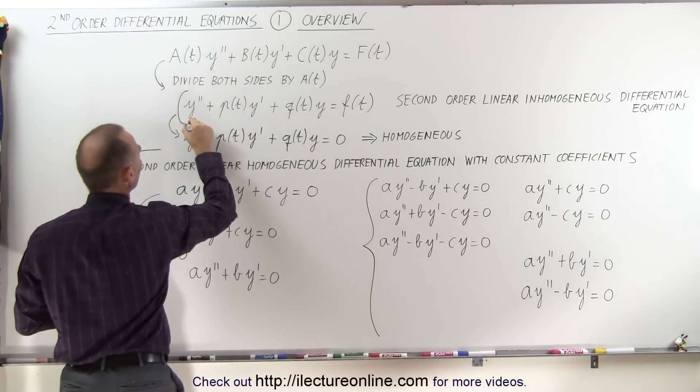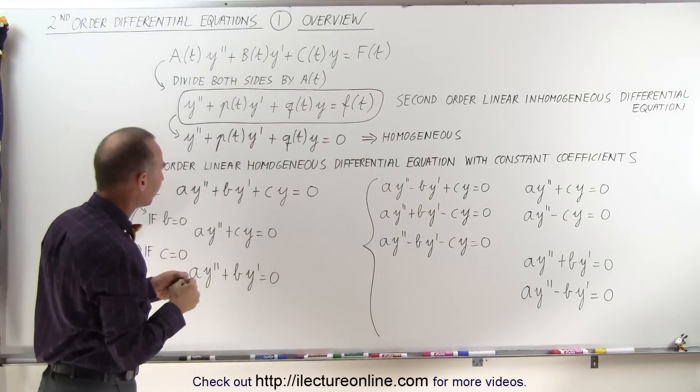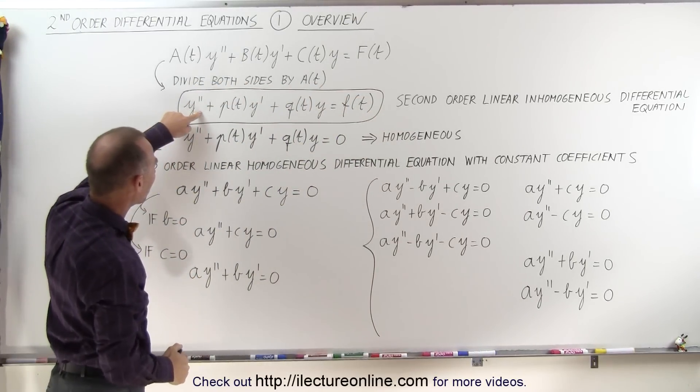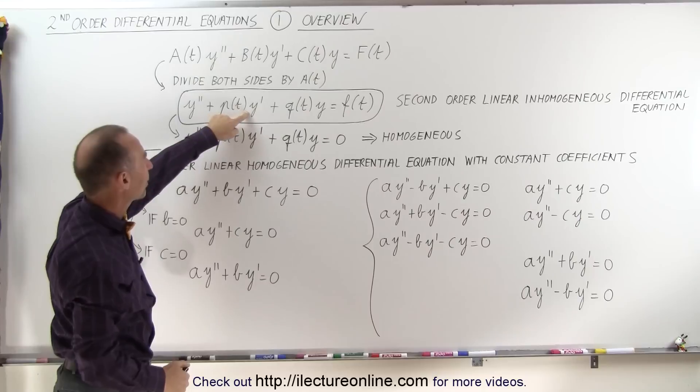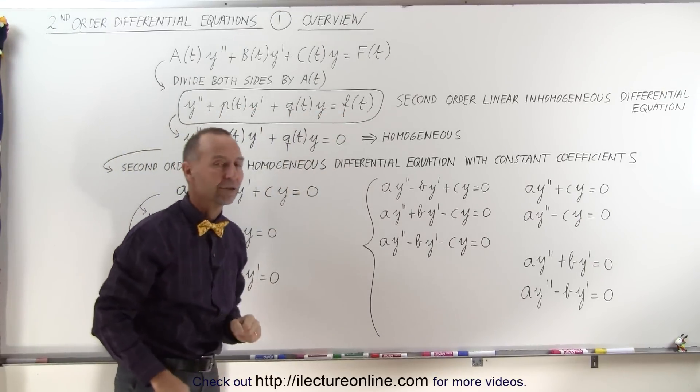And this is the more general form of a second-order inhomogeneous differential equation. Notice we have y double prime plus some function of t times y prime plus some function of t times y equals another function of t.